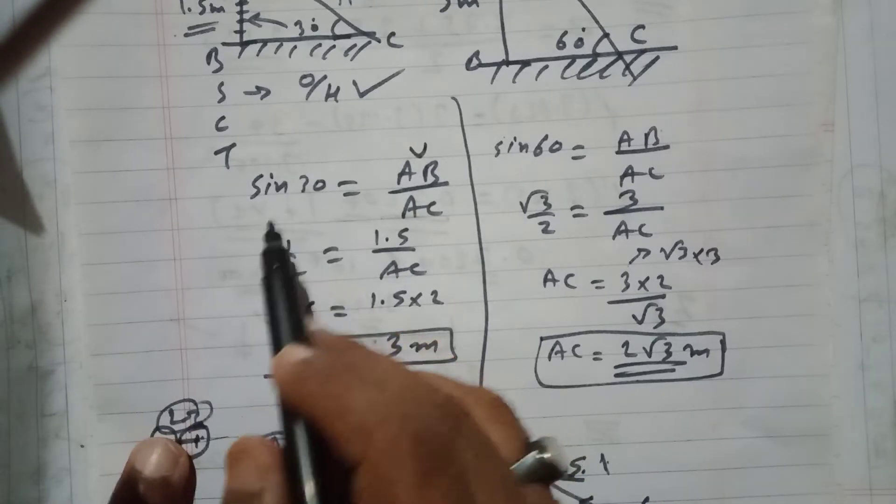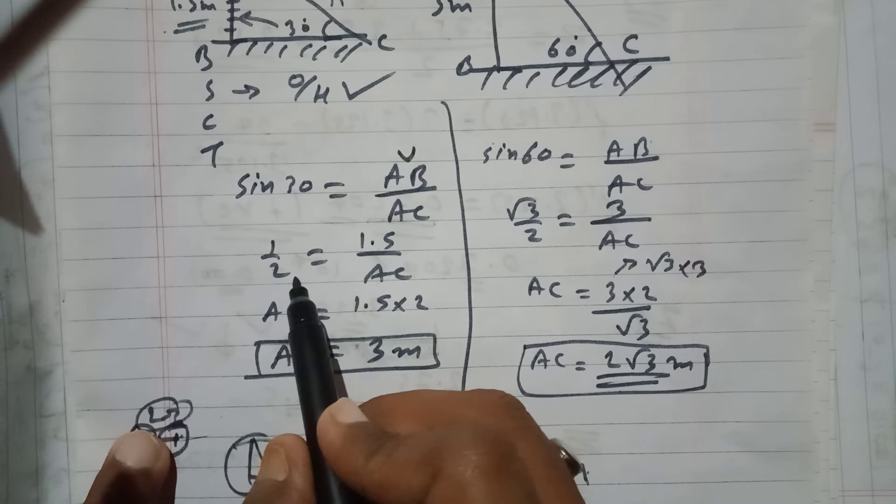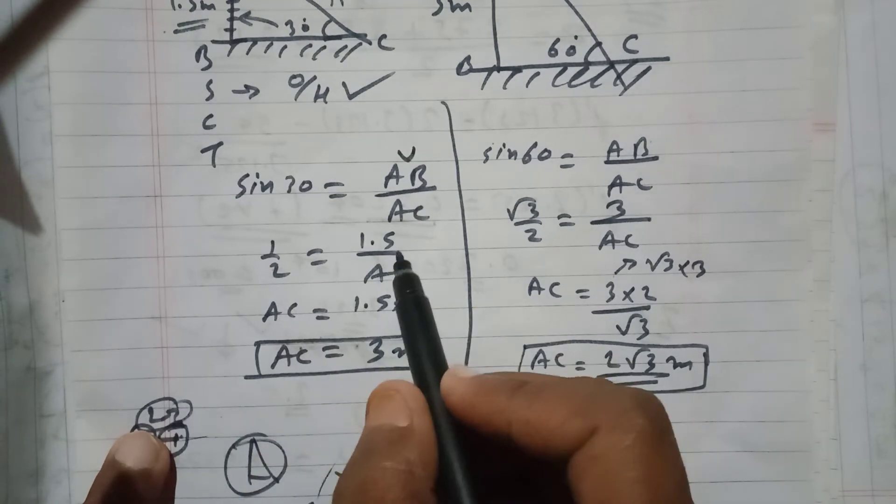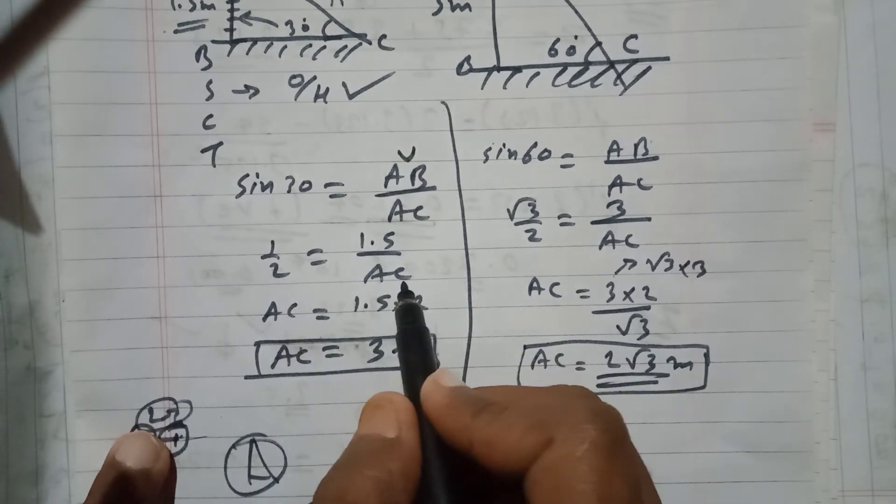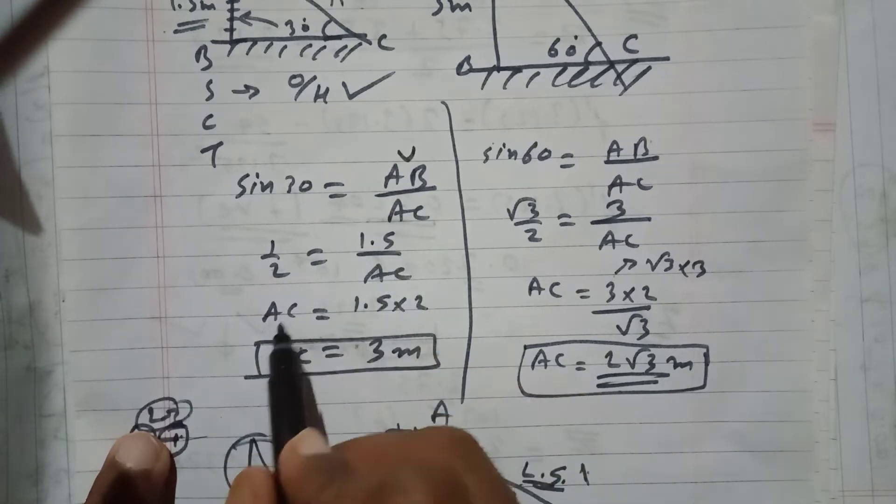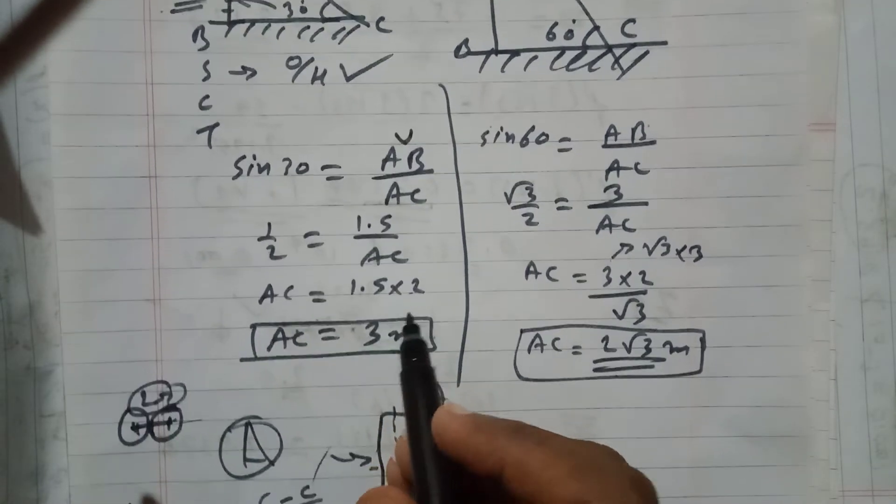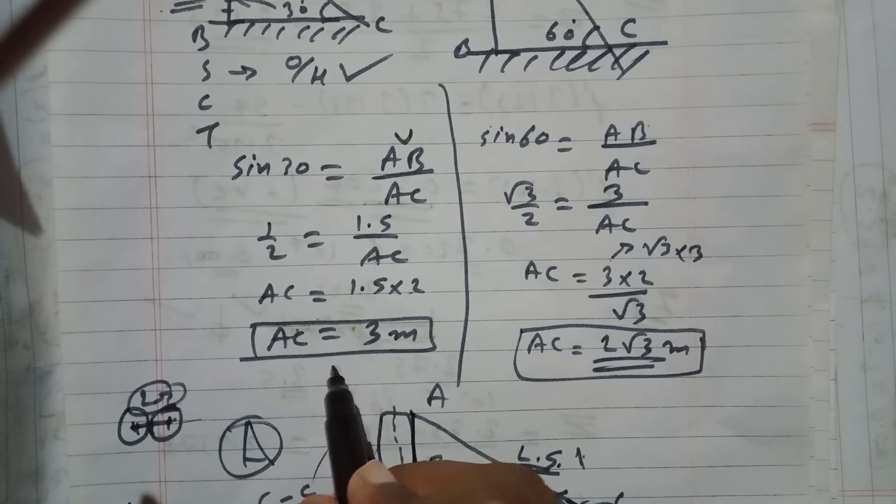I will use sine formula. Sine 30 is equal to AB upon AC. So sine 30 is half, and AB is 1.5, and AC we need to find out. I will rearrange them. I will transfer this AC here and 2 over here. So AC is equal to 1.5 times 2, which will give you 3 meters.